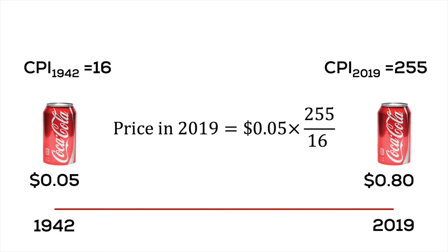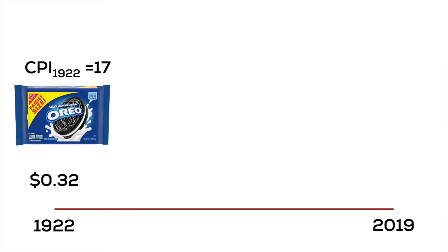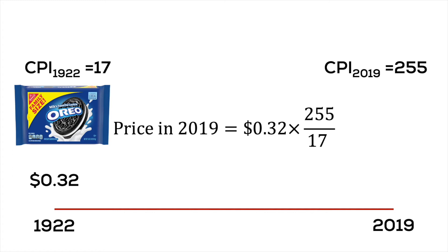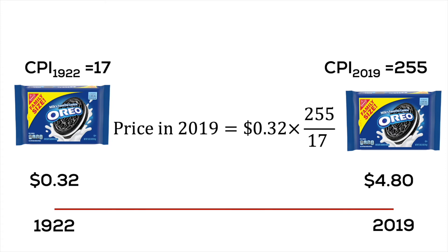One pound of Oreos in 1922 cost 32 cents and the CPI then was 17. The same package today should cost $0.32 times 255 divided by 17, which equals $4.80. What's the price of one pound of Oreos at the grocery store today? Check it out and tell me what it is. If it's less than $4.80, then the price of Oreos increased at a rate lower than inflation.